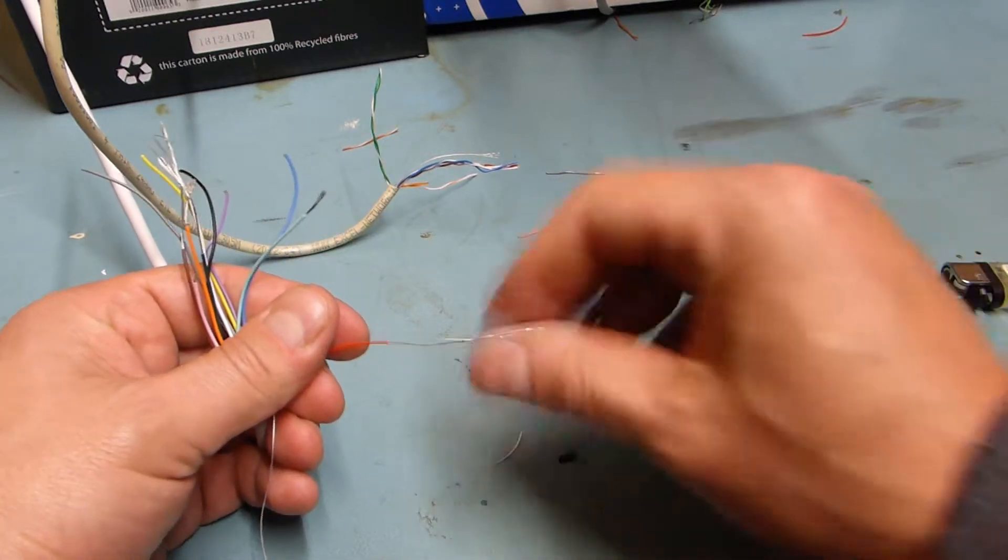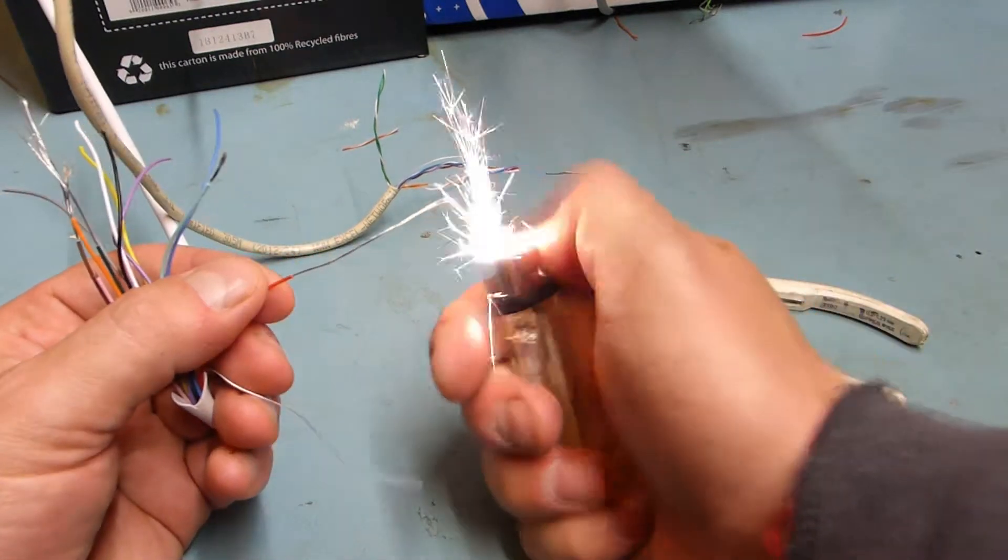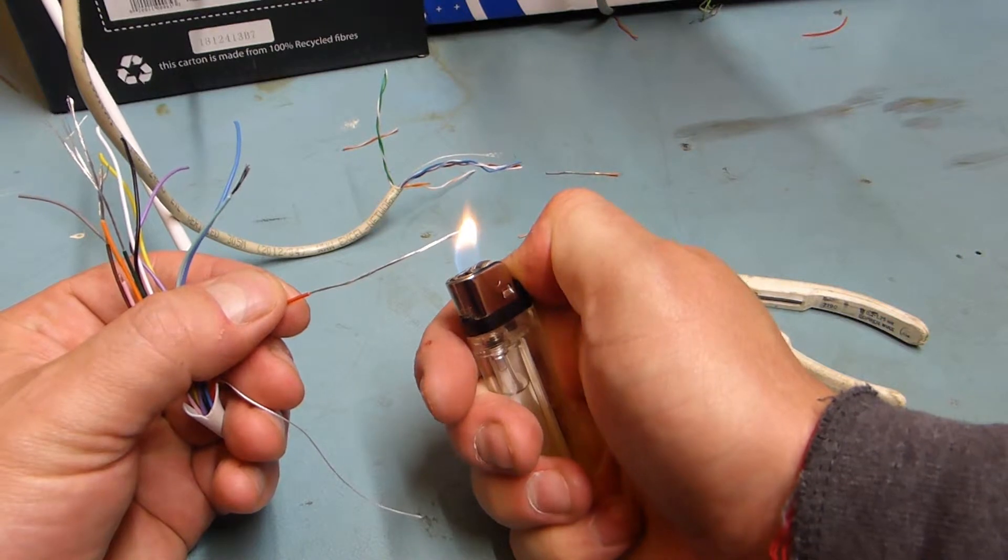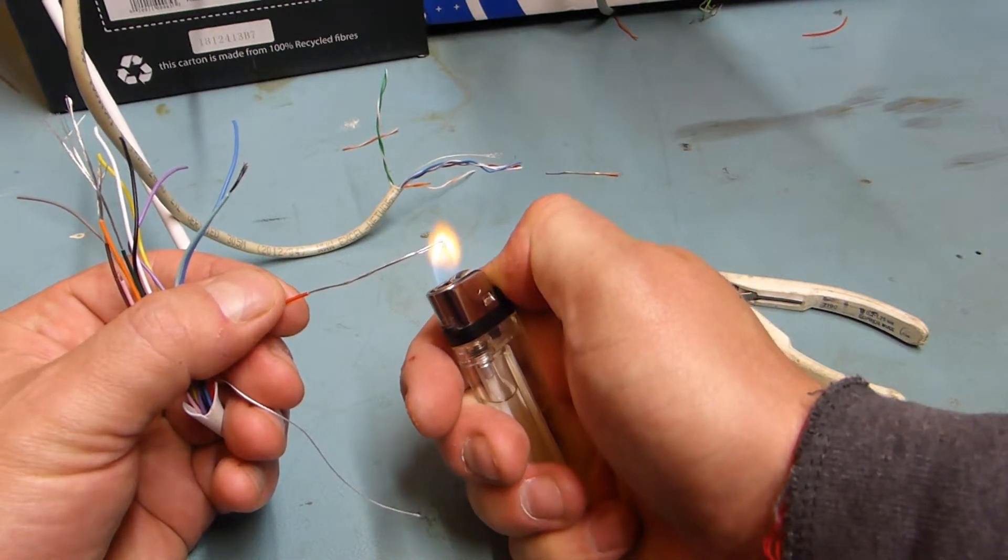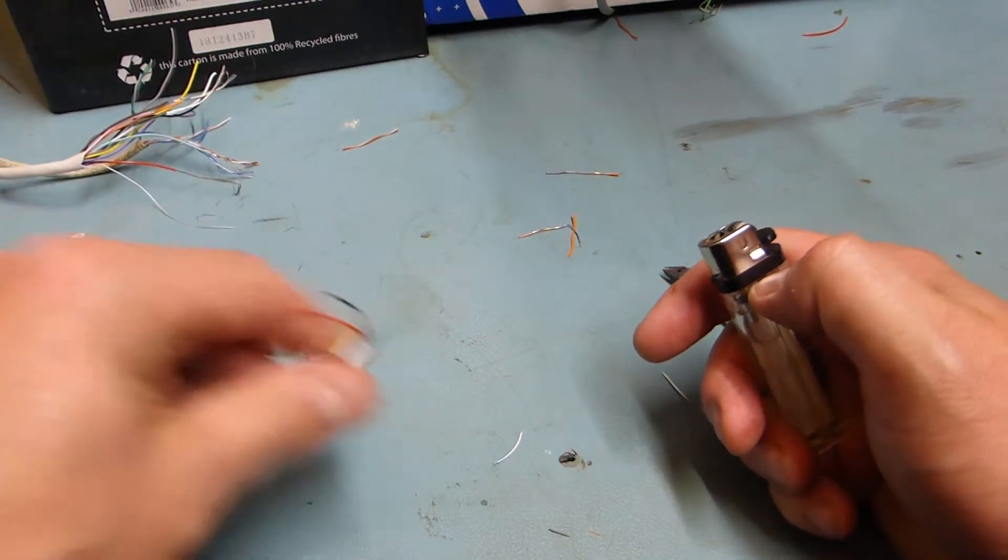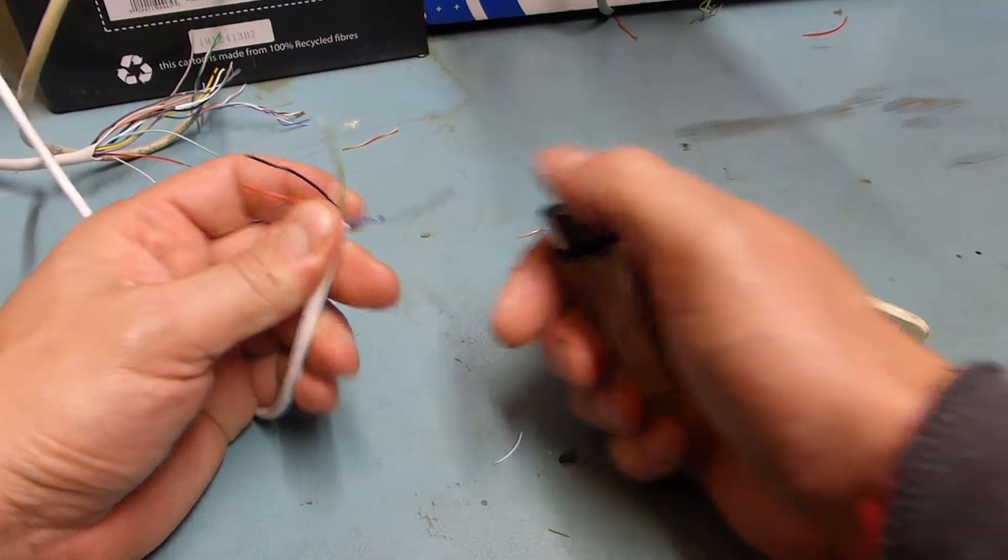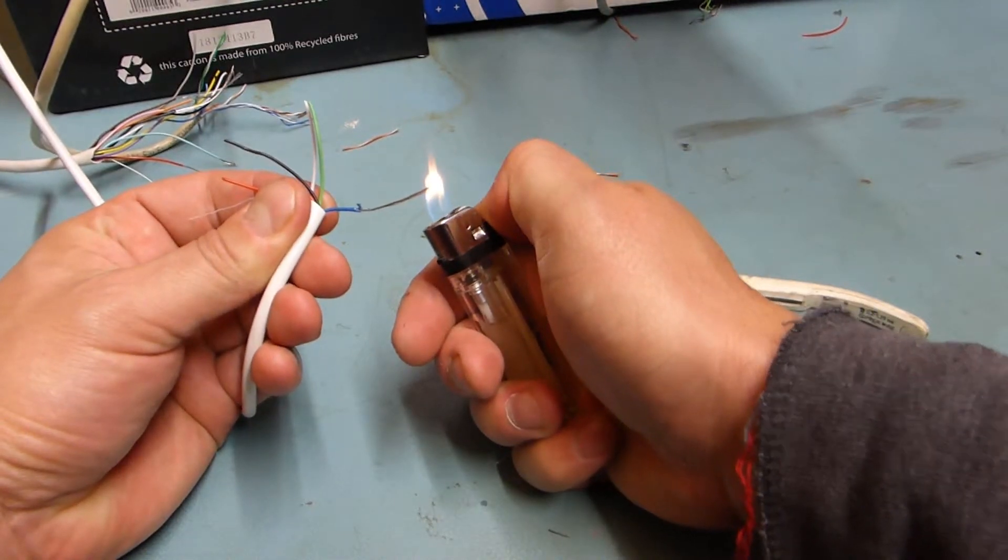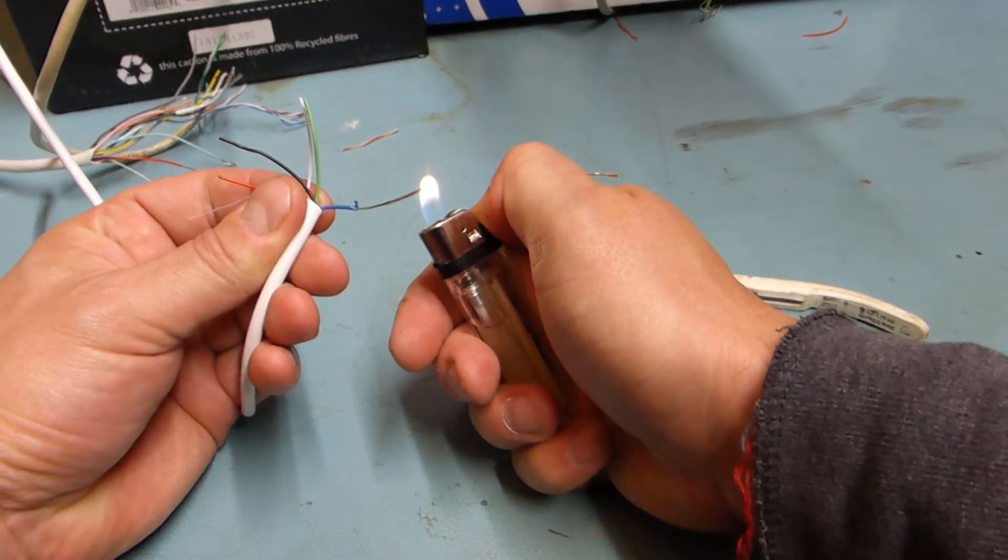So again, I know that this is aluminum. You can see it just dissolves away. Whereas this is real copper. So this is just alarm cable as well but it's made of real copper.